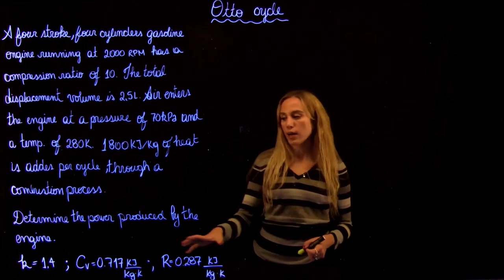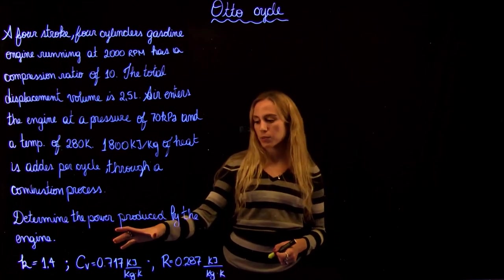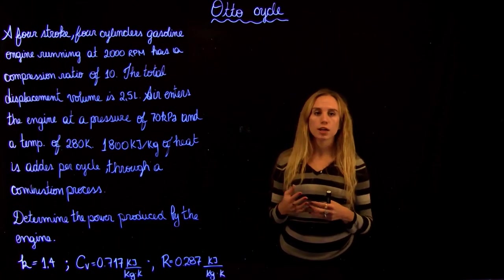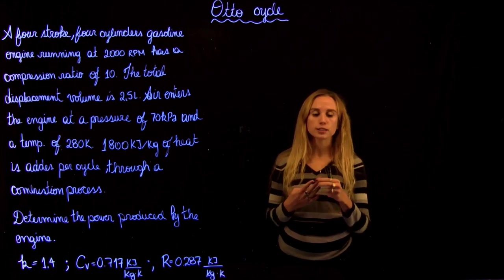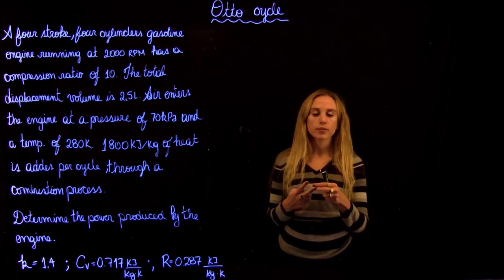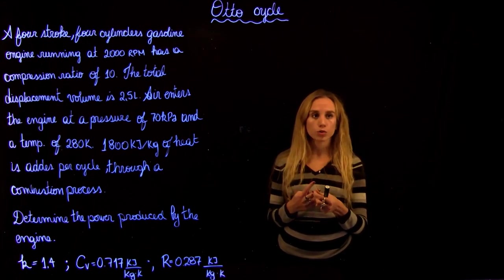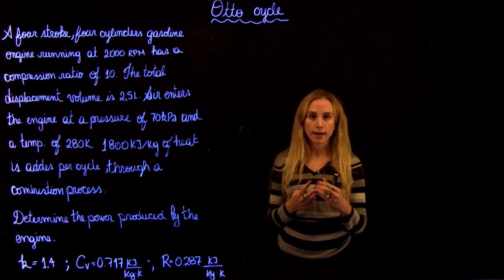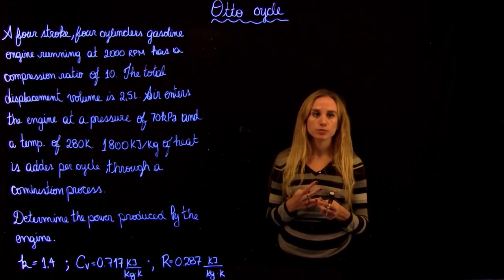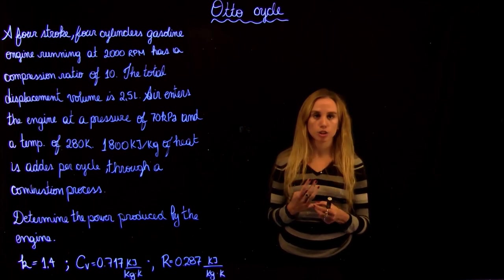We are asked to find the power produced by the engine. In an Otto cycle, there are four parts: we have the compression of the fluid, then we have the combustion where heat is added, then we have the expansion, and then we have the exhaust.